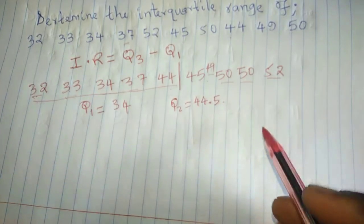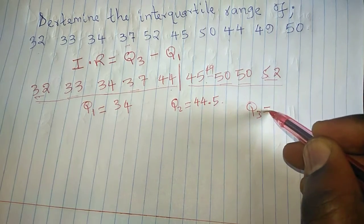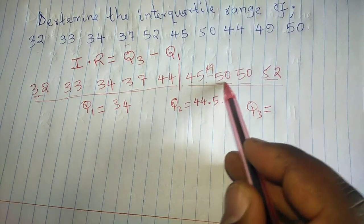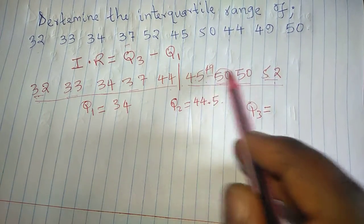Then on the other side, we can get Q3 by getting the median of this set. So the median will be 50, because we have 45, 52, 49, 50, we remain with 50 at the center.